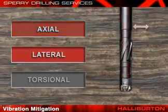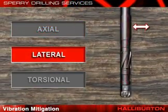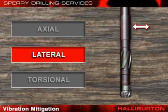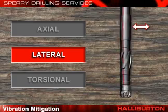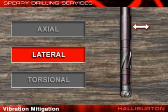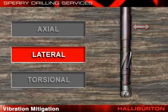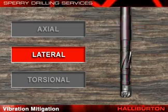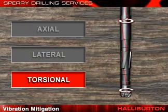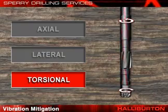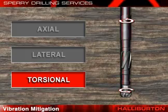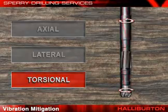In the lateral mode, the vibration is side-to-side motion that causes flexing or bending of components, again leading to stress reversals, where one side of the pipe will be in a different tensional state than the other. In the torsional mode, the vibration is resistance to rotation, resulting in twisting as torque is applied to overcome resistance.